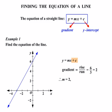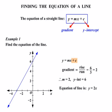Now we need to work out our plus c, or our y-intercept. There's our y-axis — where does the line cut through it? Right there at a value of six, so the y-intercept is equal to six. Therefore the equation of our line is y equals mx, where m equals two, plus c, where c equals six. The equation of our line is y equals two x plus six.